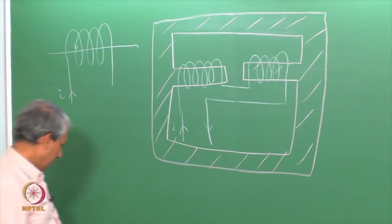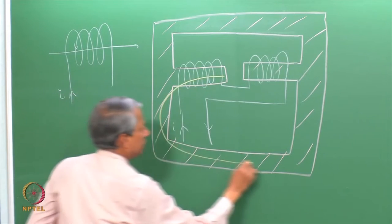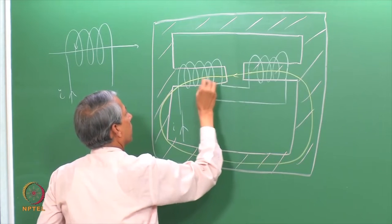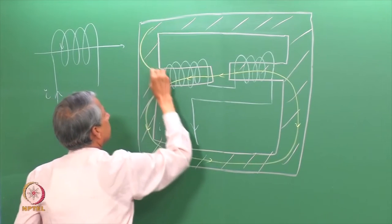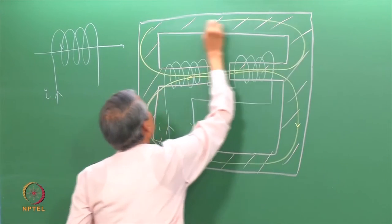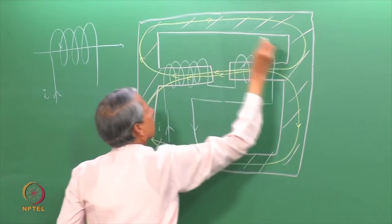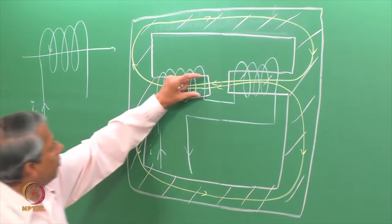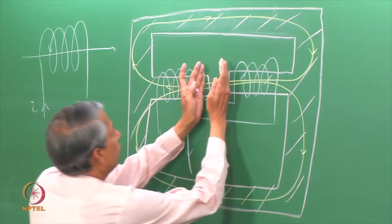Here the magnetic field lines will have this sort of arrangement. Similarly, here these magnetic field lines are completed. This gives very homogeneous magnetic field at the centre of these two pole pieces.